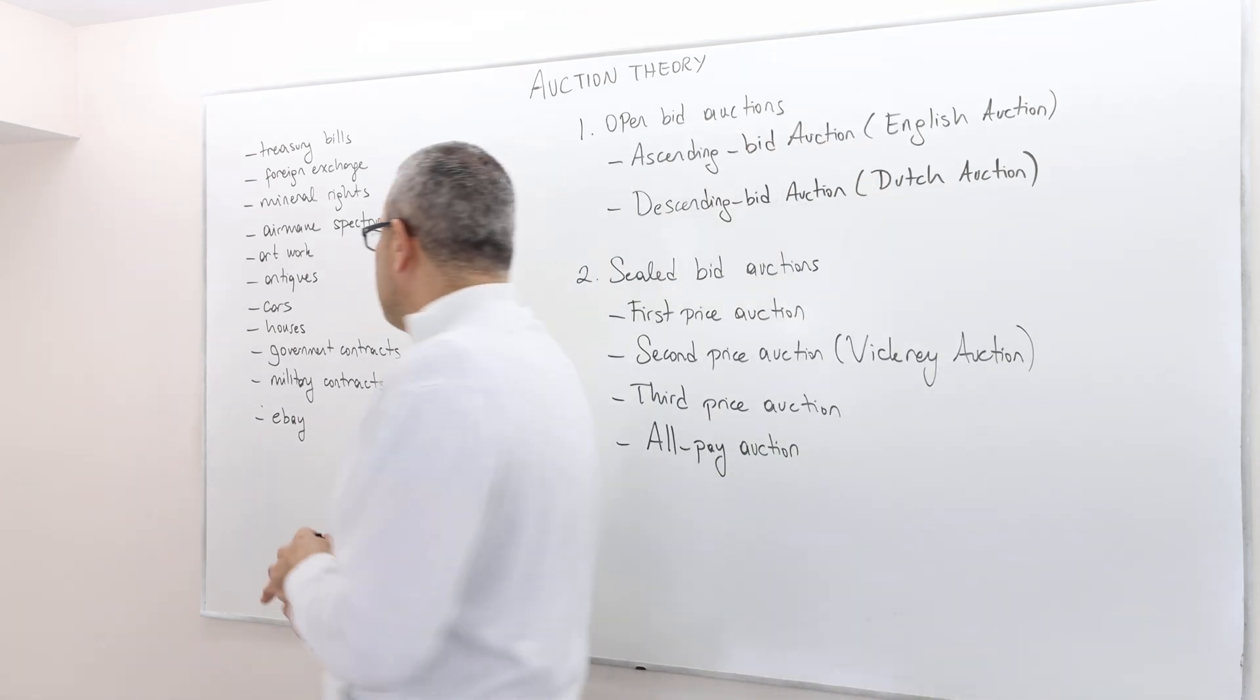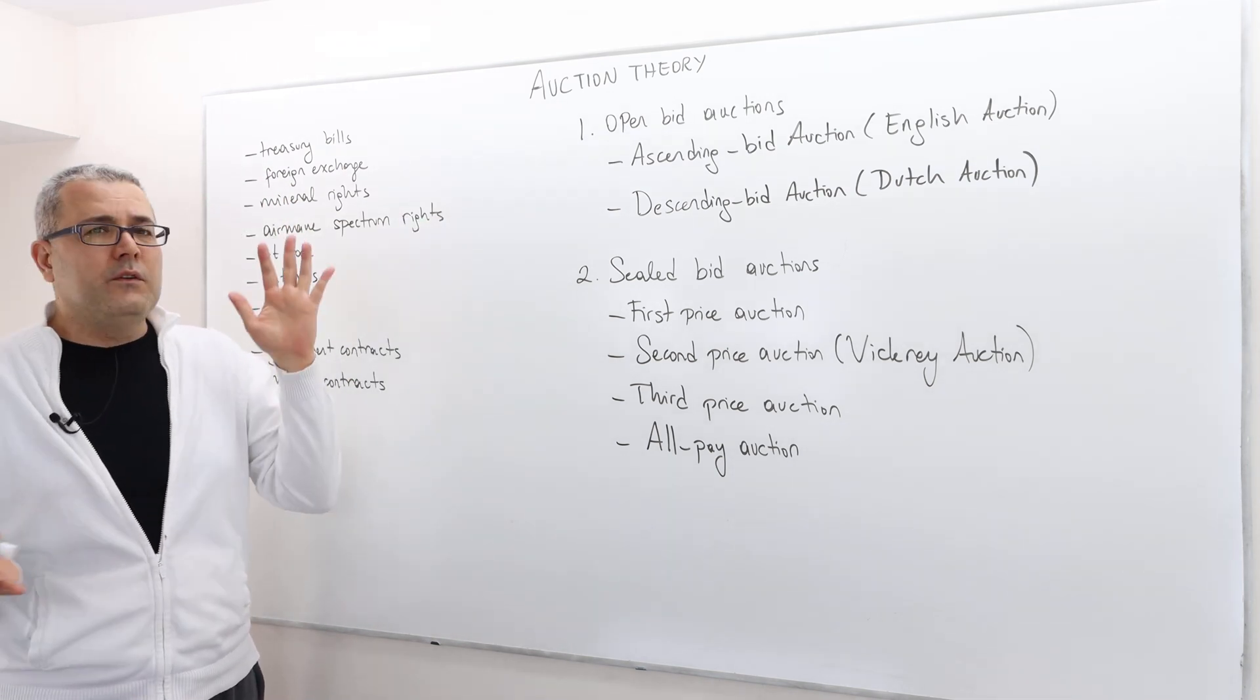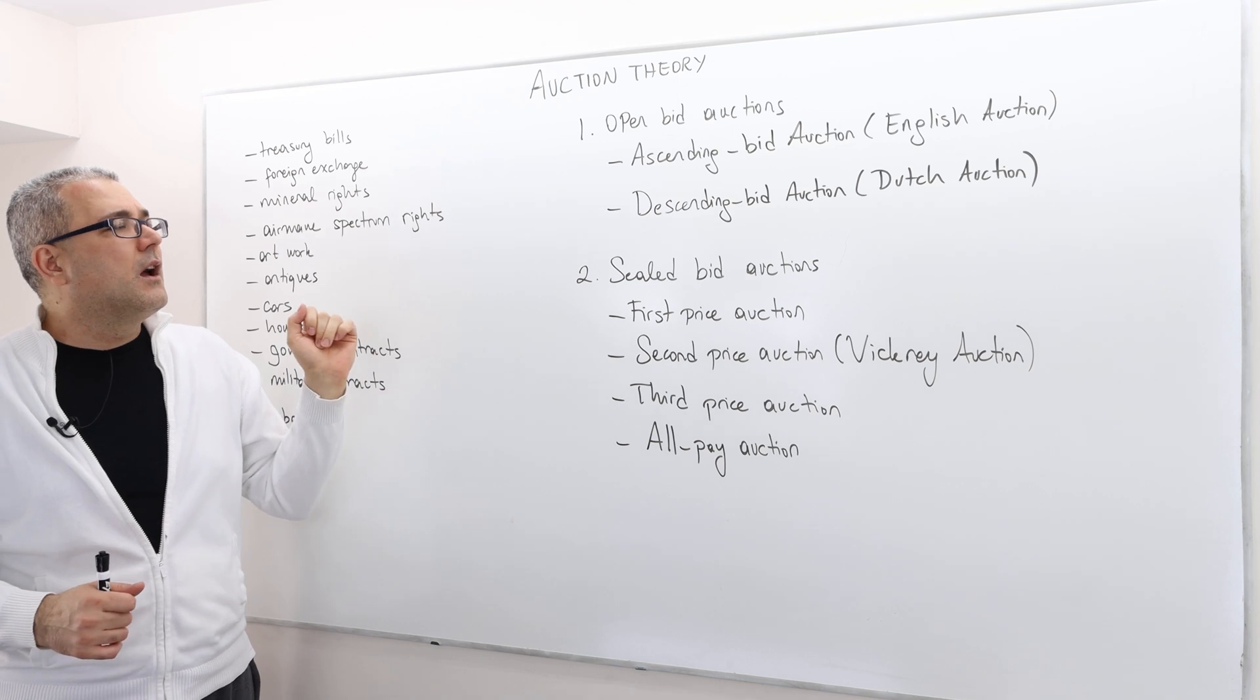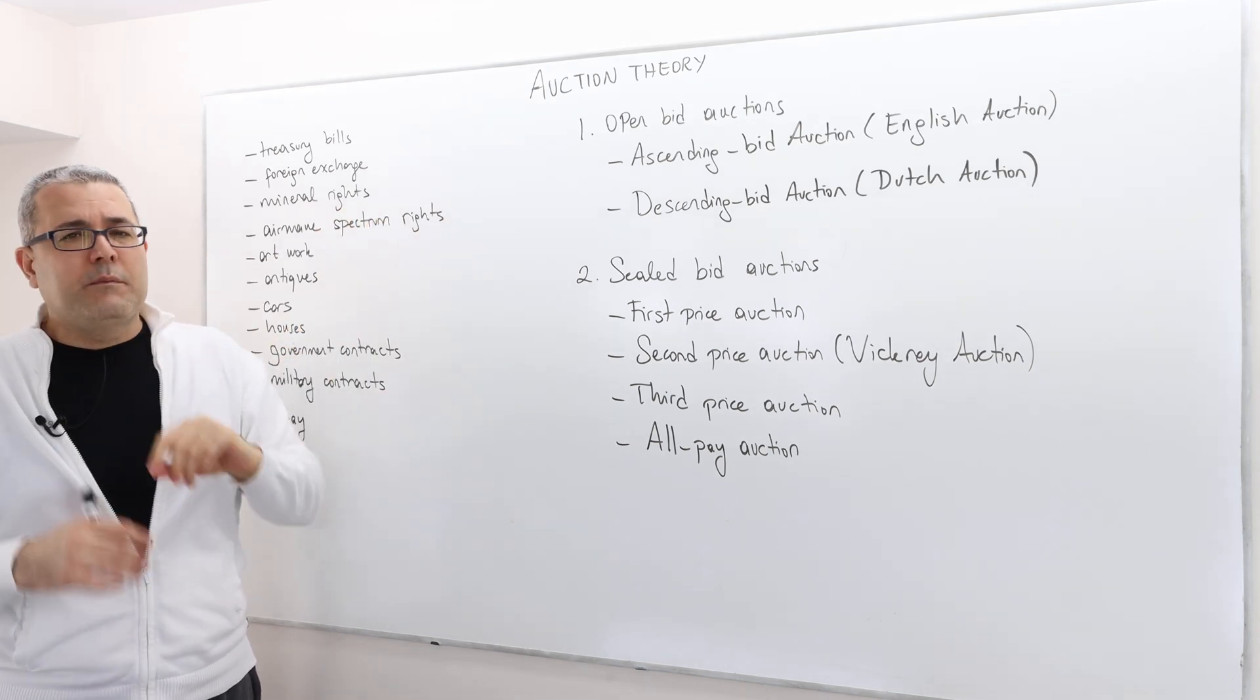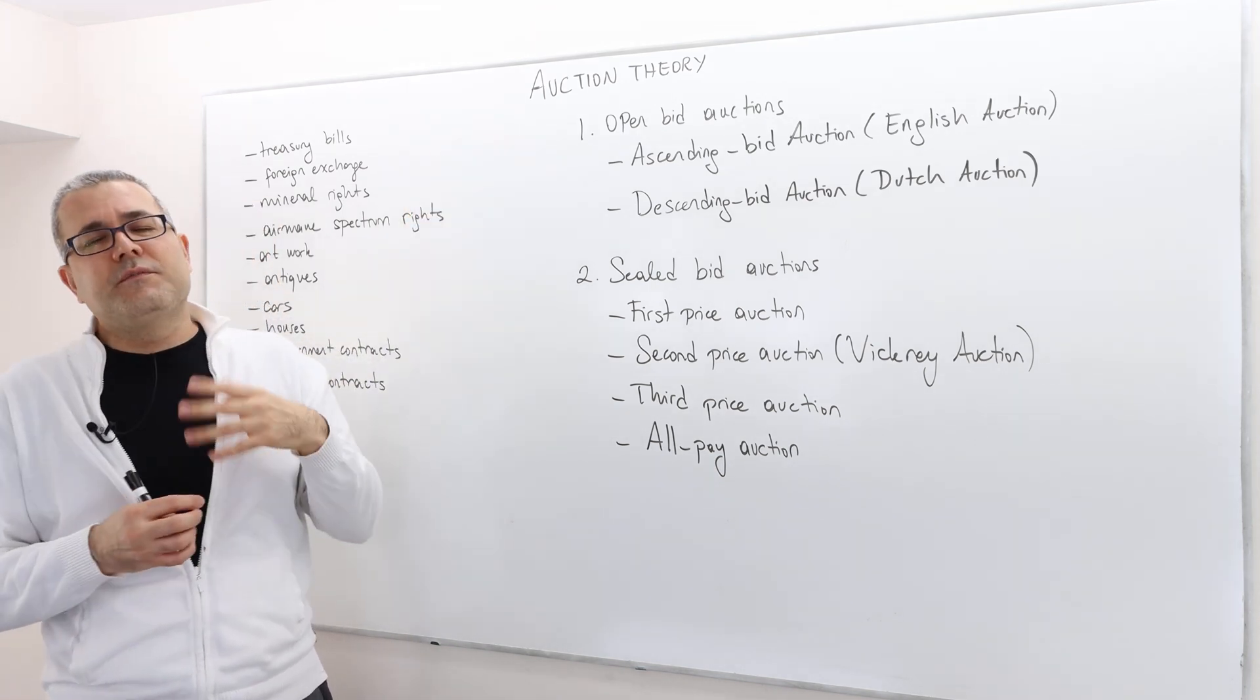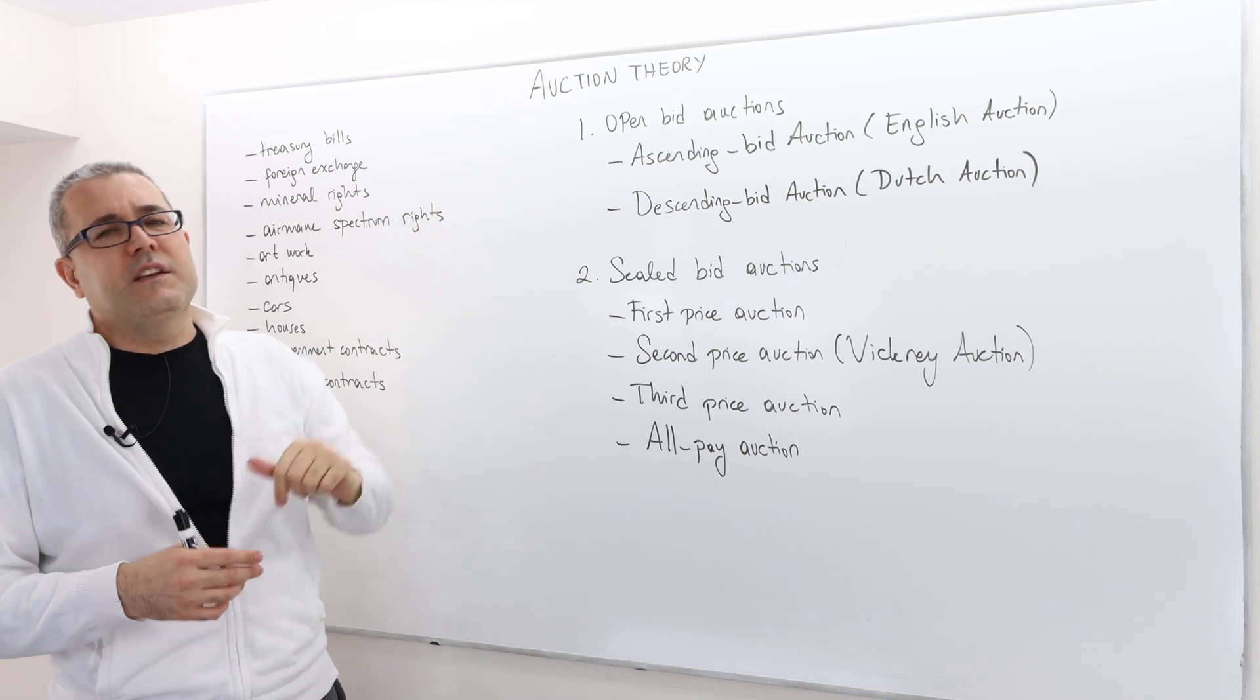So there are different auction methods. So I'm going to sort of divide them into two classes, open bid auctions versus sealed bid auctions. In the open bid auctions, I divide them into two categories briefly. It's just two examples in this category.